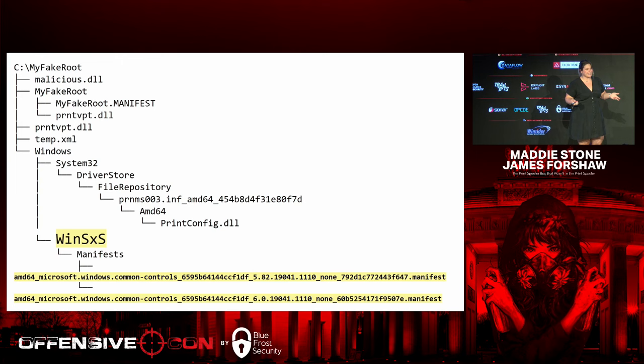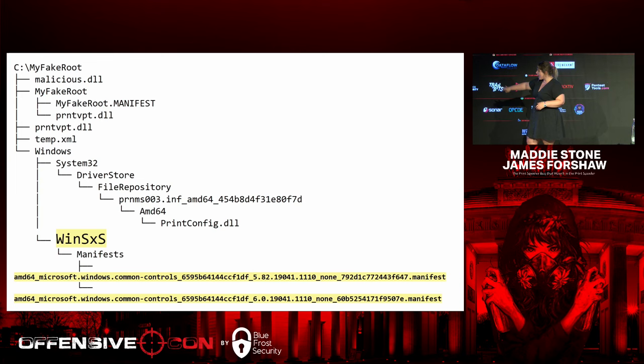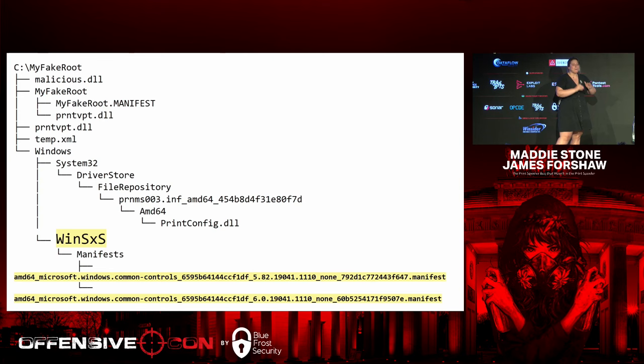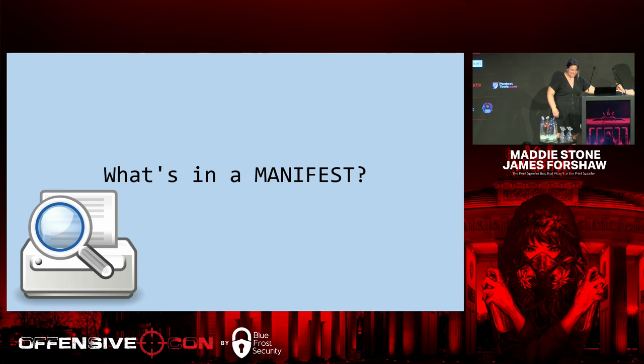The only files being dropped were first a printconfig.dll — which, looking at load_new_copy, is one of the DLLs that changed function would load — as well as two manifest files under a WinSxS directory. I had never heard of manifest files. These whole path names seemed very convoluted and not clear to me what was happening. So of course what I did was: James, help me. What's going on here? What is a manifest file?